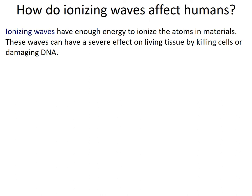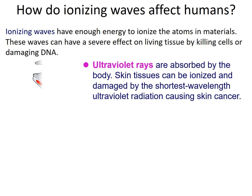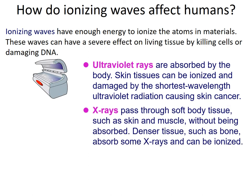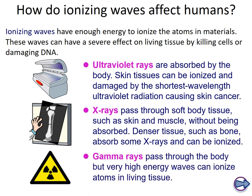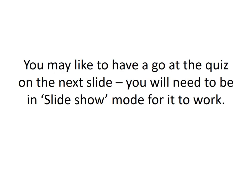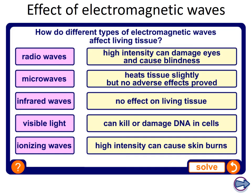Summary: ionizing waves affect humans by ionizing atoms, potentially killing cells or damaging DNA. UV rays are absorbed by the skin. X-rays pass through the body but are absorbed by denser materials like bone. Gamma rays can pass through almost everything and are the most energetic, ionizing atoms in living tissue.